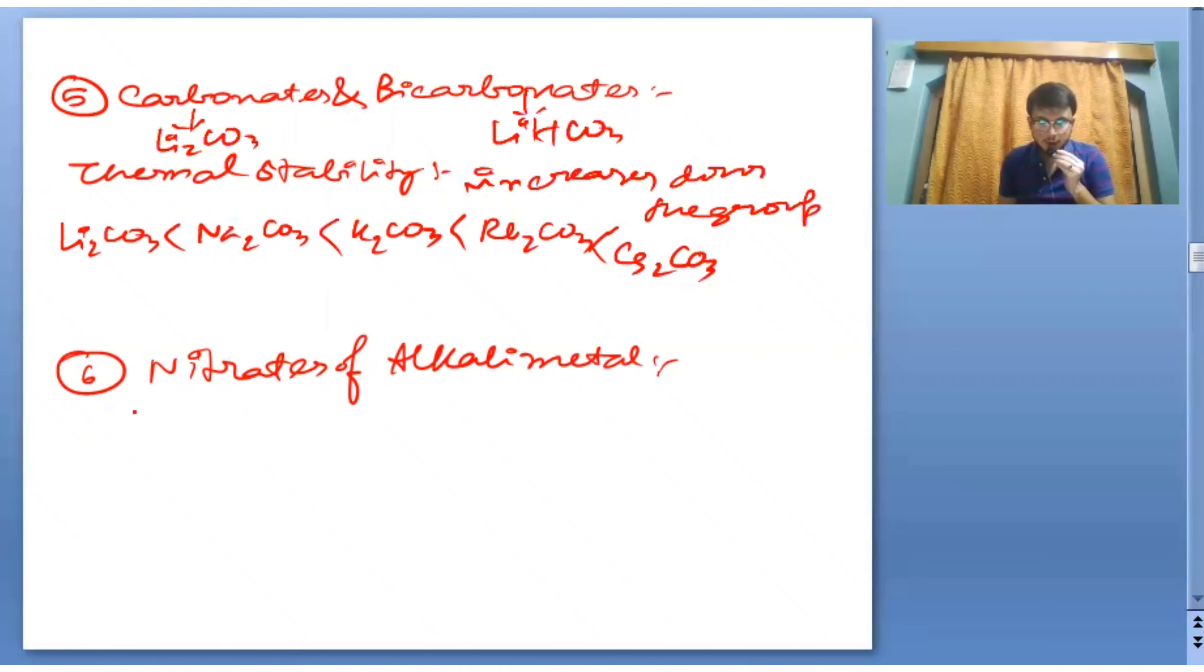Now in case of nitrates, the thermal stability order will be the same as carbonates. That is LiNO3 less than NaNO3 less than KNO3 less than RbNO3 less than CsNO3.